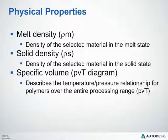Now we'll discuss some of the common physical properties of a polymer. One is the melt density — just as you might assume, the density of a material in its molten state. The solid density is the density of that material in its solid state. We also have the specific volume, which is typically captured by a PVT diagram. This diagram illustrates how the temperature-pressure relationship affects polymers over the entire processing range, showing us the relationship between temperature and pressure on the specific volume of a material.